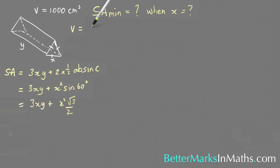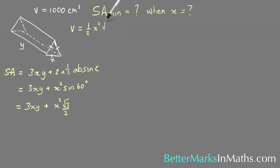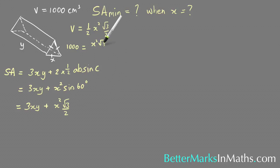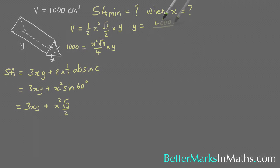In the volume formula, the area of the base is just one triangle — half the quantity shown for the two ends — so that's one-half times x squared root 3 over 2, which equals x squared root 3 over 4. With volume equal to 1000, we get: 1000 equals x squared root 3 over 4 times y. Solving for y gives y equals 4000 over x squared root 3.